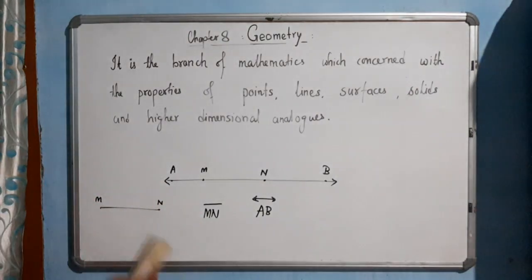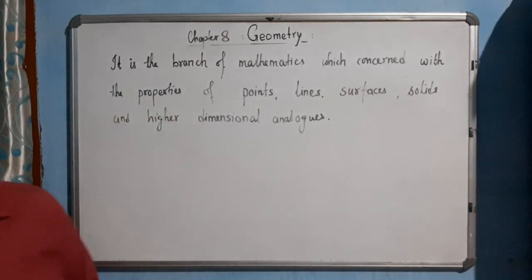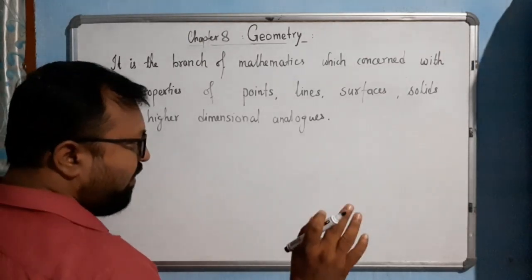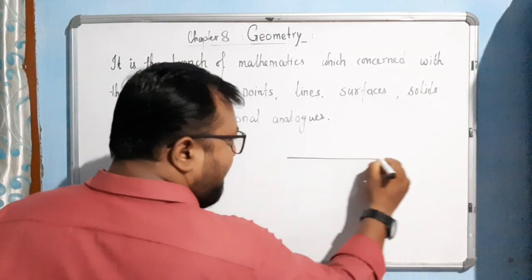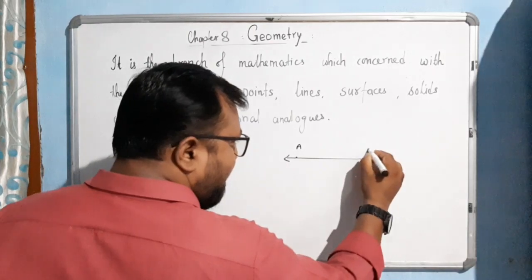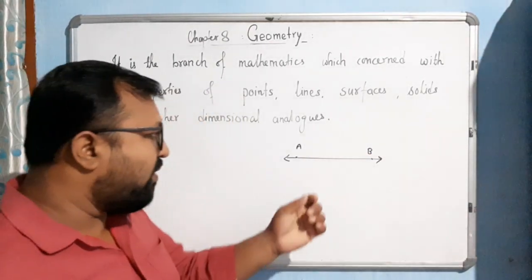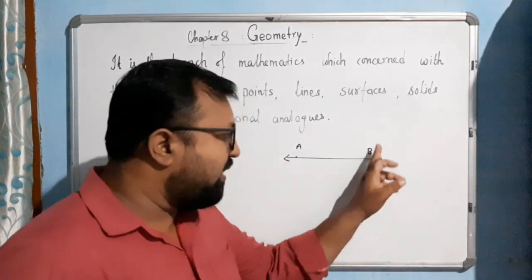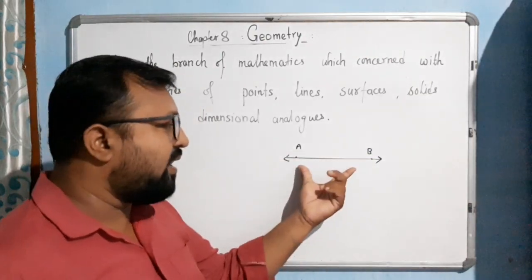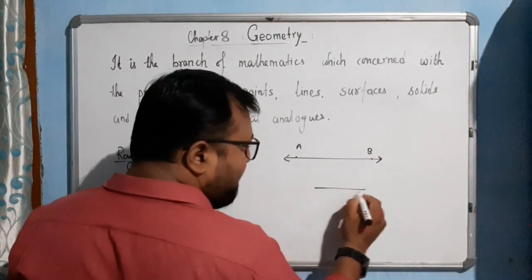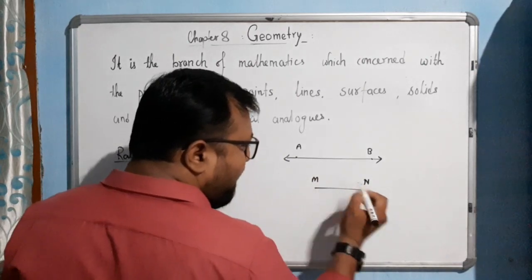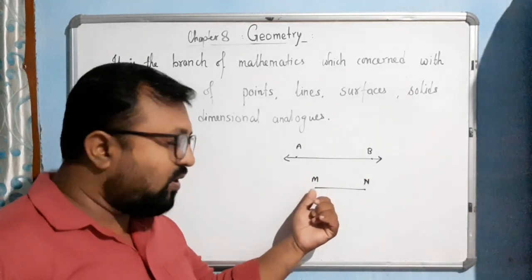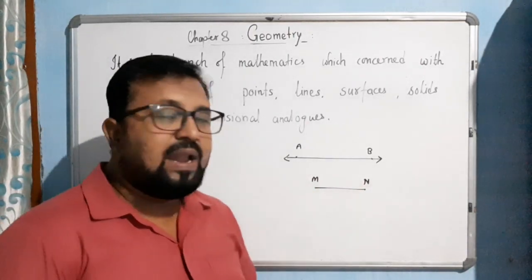The next topic is Ray. Let me recall. A line has arrows on both ends — at point A moving endlessly left, and at point B moving endlessly right. A line segment MN has two end points where the line ends at M on the left and N on the right. That is a line segment.